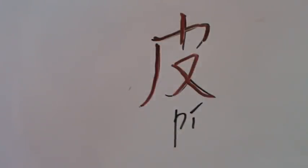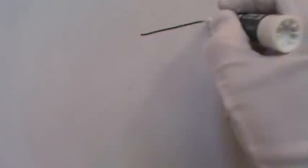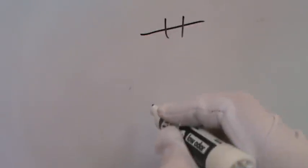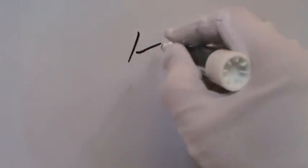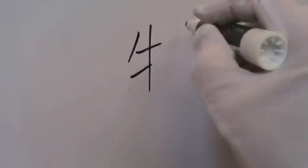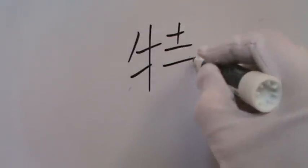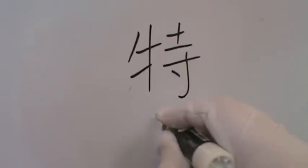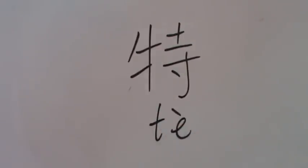Number seven: 特 (Te), written with 10 strokes. Te means special, but is also used in a man's name, like Peter. The radical is on the left, this one.